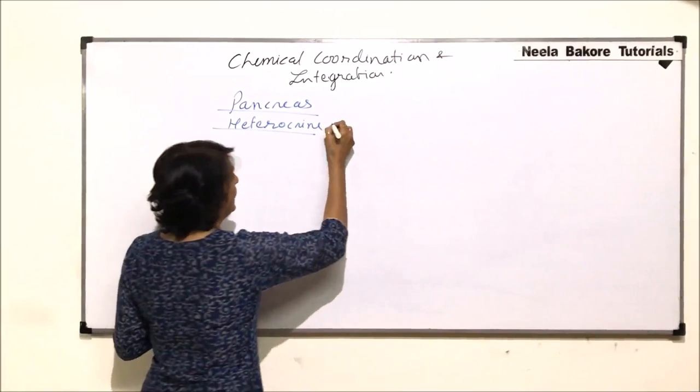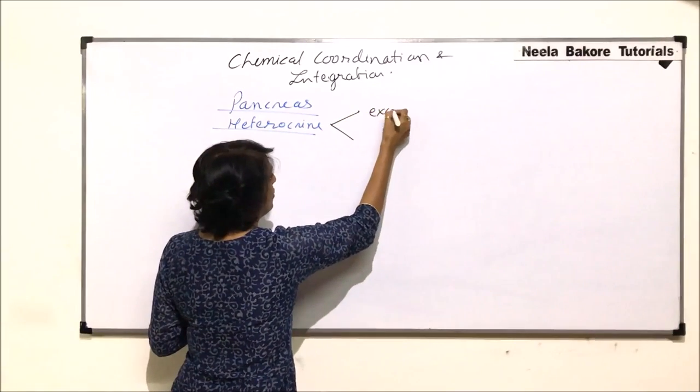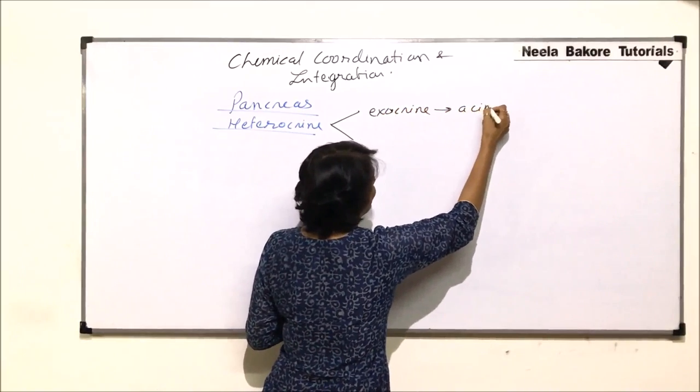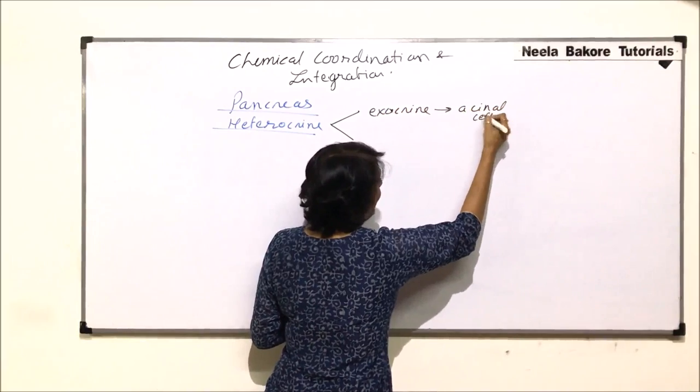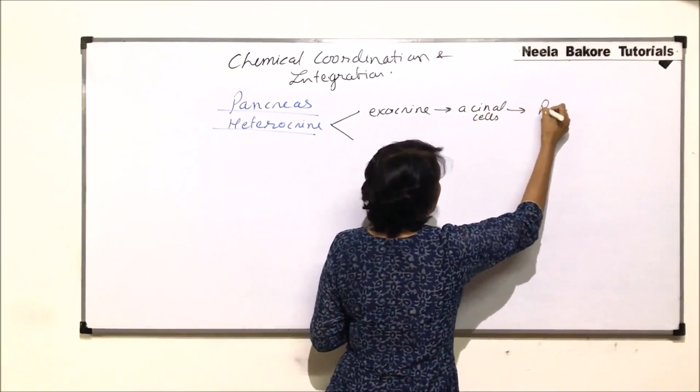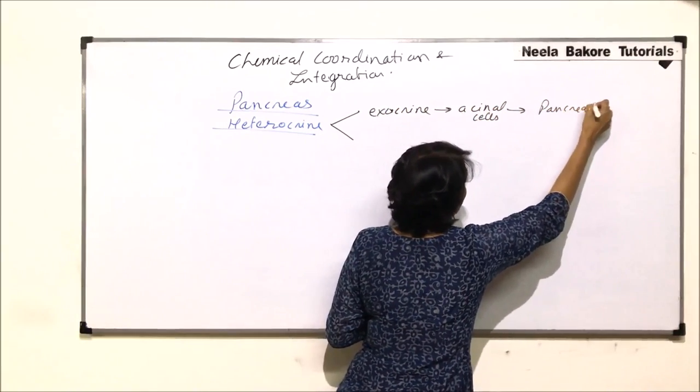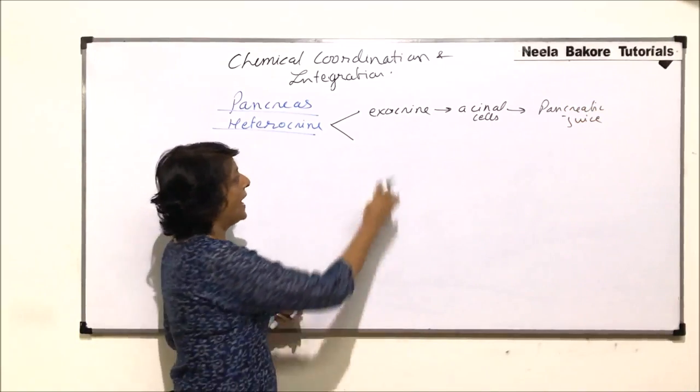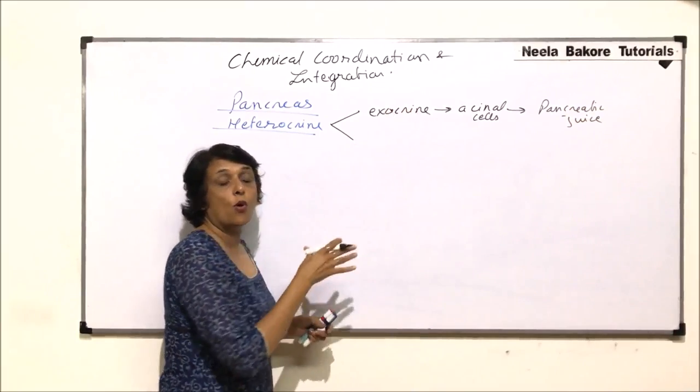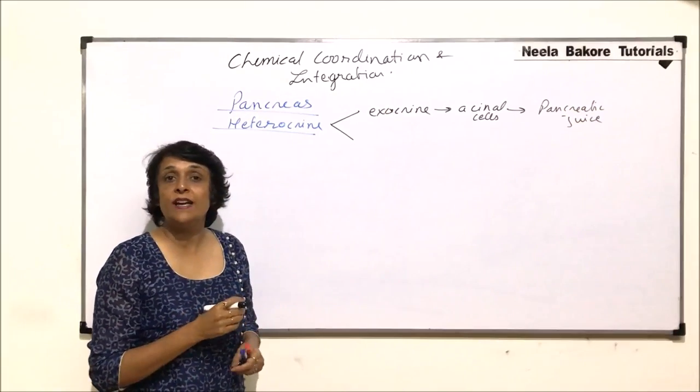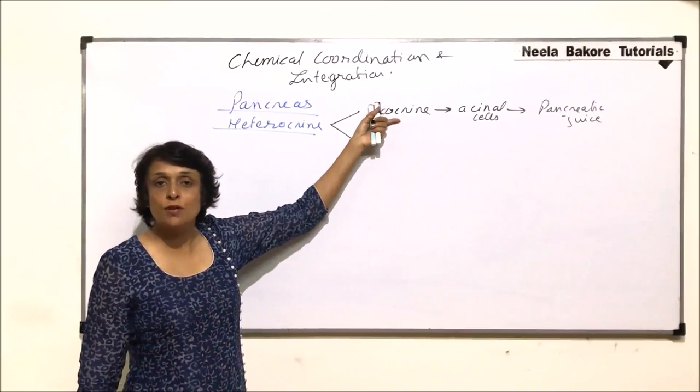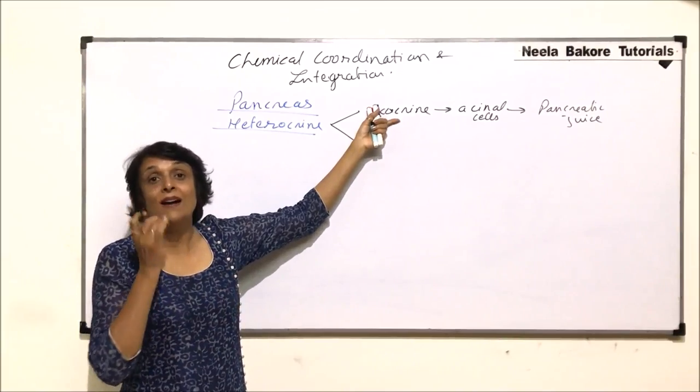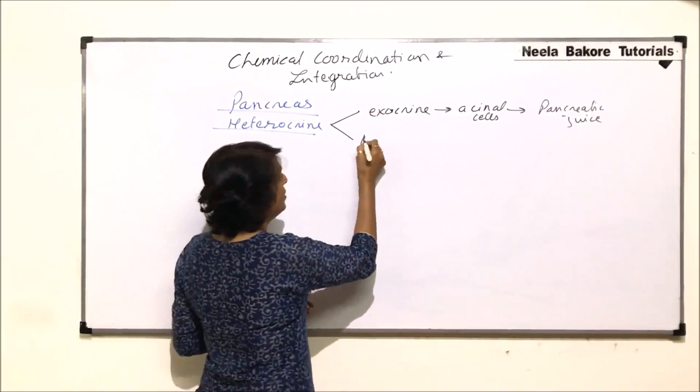The exocrine part produces cells which are known as acinar cells, and these cells secrete the pancreatic juice which helps in digestion. This juice is poured into the duodenum with the help of a duct. So this part produces secretion that is released through a duct.